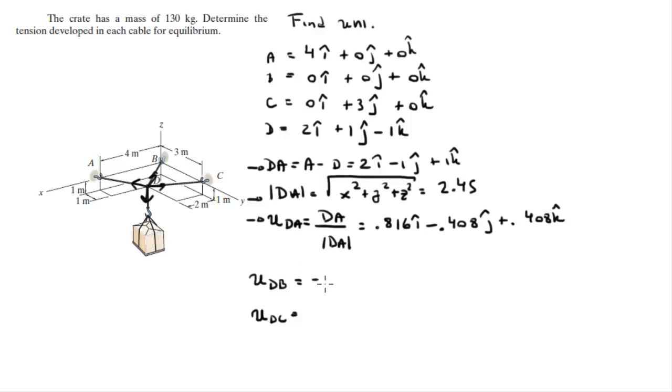You should get for DB is equal to negative 0.816 in the i minus 0.408 in the j plus 0.408 in the k. And DC should be minus 0.667 in the i plus 0.667 in the j plus 0.333 in the k.